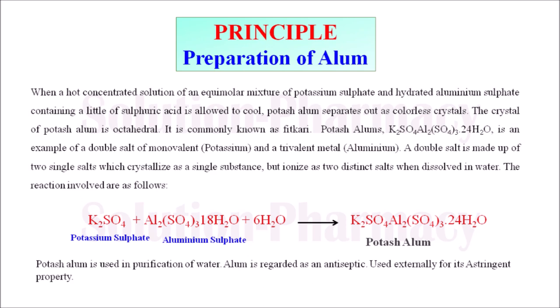You can see the reaction involved in the preparation of potash alum. Potash alum is used in the purification of water, and alum is also regarded as an antiseptic. It is used externally for its astringent property.